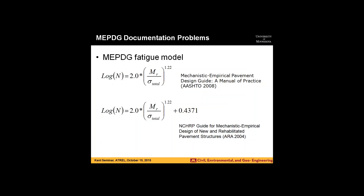Now, let's talk about the fatigue model. The manual of practice had one equation; the original report had a different one. It took us significant effort in back-engineering to show what the correct equation is. There is a need to 'declassify' the MEPDG — to document really what's inside and eliminate discrepancies like this. In this particular case, it might just be a typo. There are some other examples that are not as innocent.